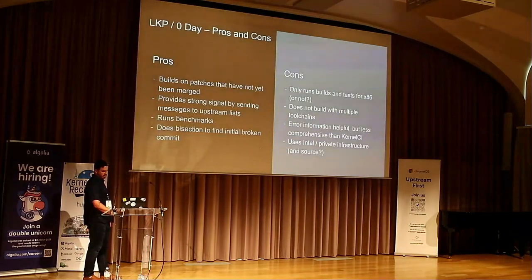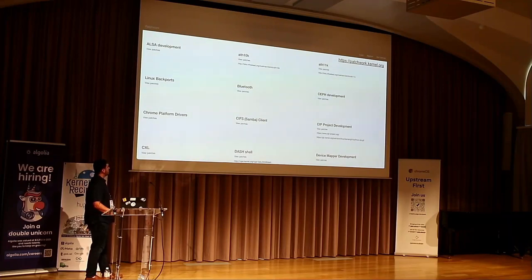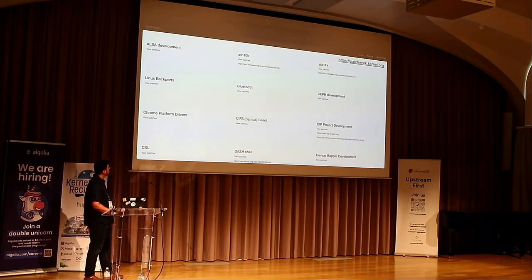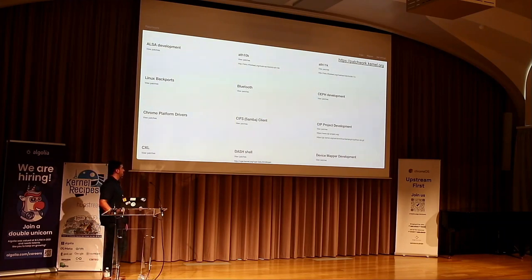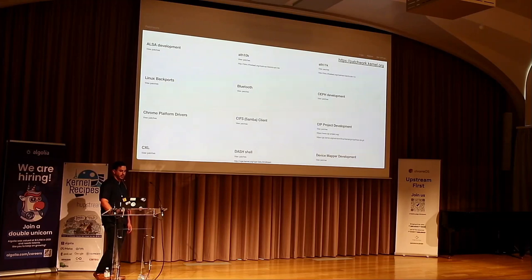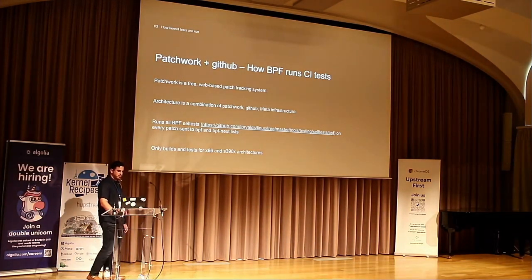This is what Patchwork looks like. Really commonly used by maintainers — it's a nice way to see which patches have been sent to your list and see the discussions that have taken place. Unlike KernelCI where it's really more about the stability of the trees and branches, I would say Patchwork is a little bit more about the current discussion and the state of things around your trees and branches. It's a free web-based patch tracking system. We use it at Meta for running BPF tests and some networking tests.